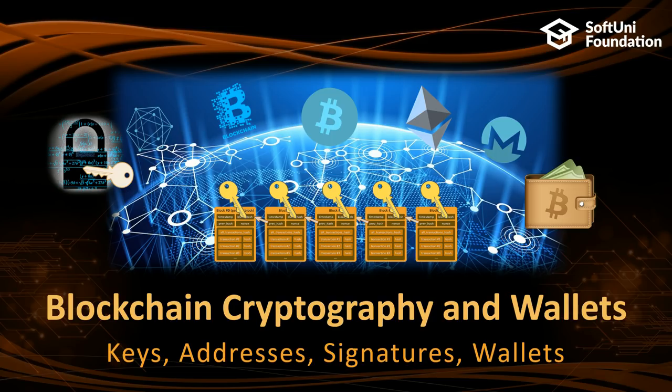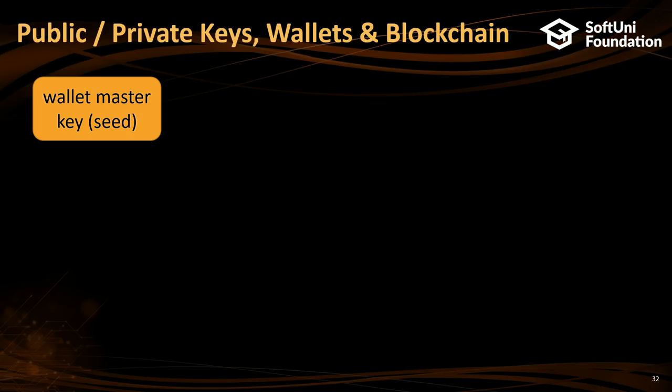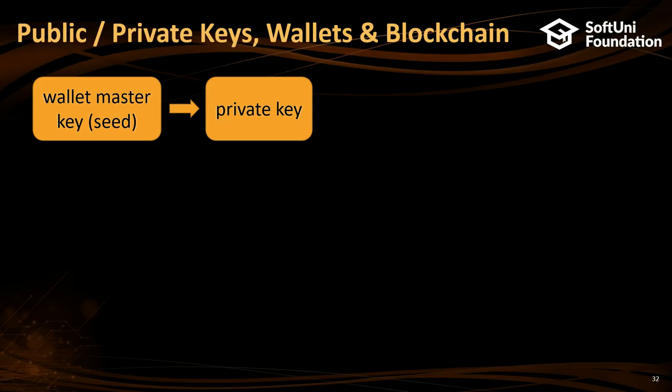Let me talk about wallets. Generally in blockchain we have a wallet with a master key, and most wallets are so-called hierarchical wallets. You have some mnemonic phrase — something like a password — and you derive your root key, the wallet master seed, from it. From this you derive many private keys for addresses. For example in Bitcoin, it is considered insecure to use an address more than once. If you send 10 to Gosho and return change back, the change goes to another address in the same wallet.